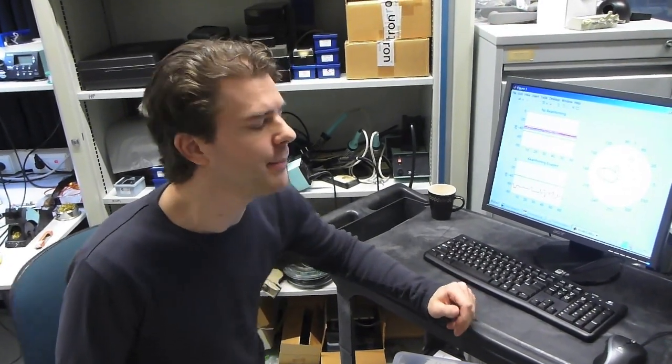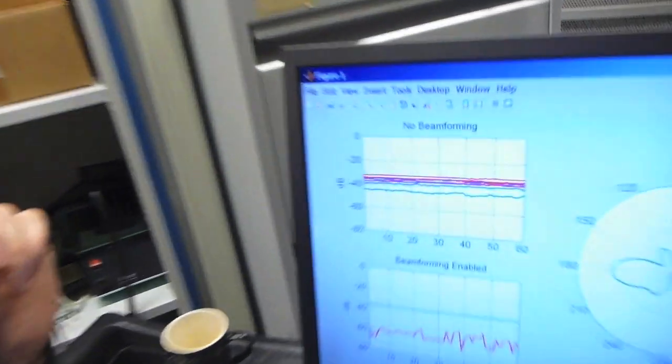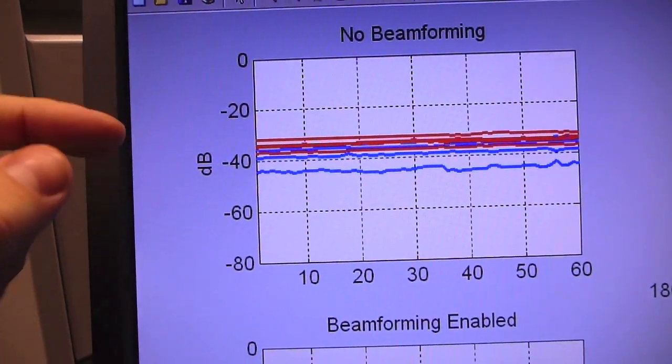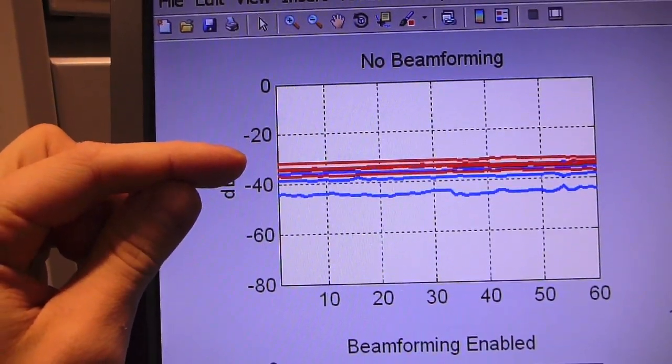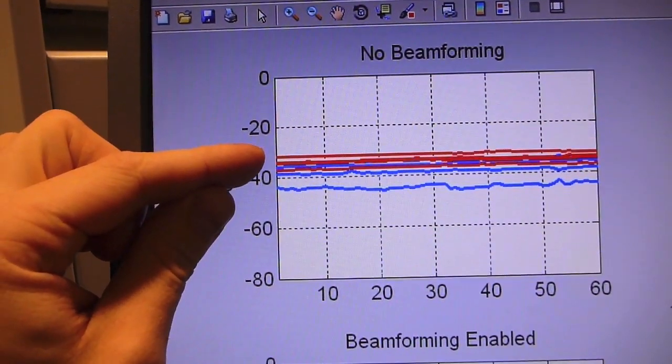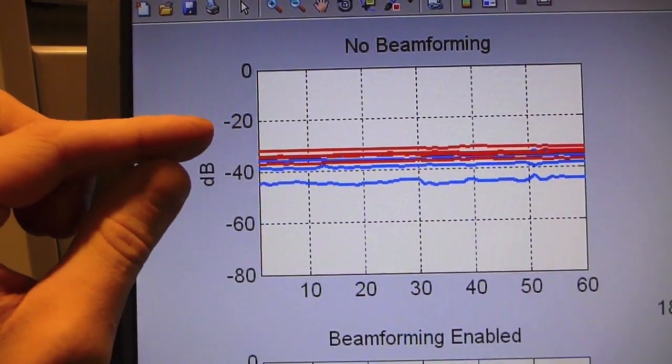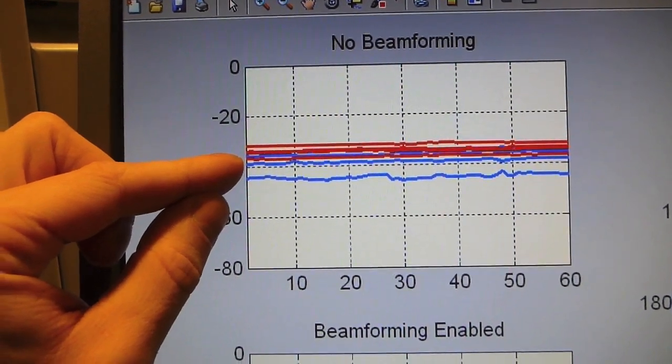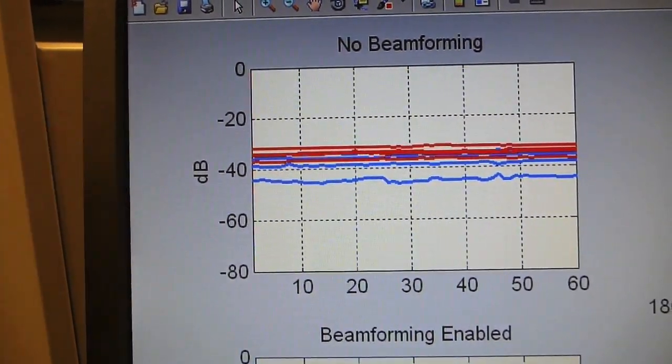Here we see the output of our beamforming algorithm. On the screen we have a plot where we see the power as a function of time, where our interferer is shown here in four red lines for the four receiver antennas and our desired signal is also in four lines in blue. And we see that the interferer is stronger than the desired signal.